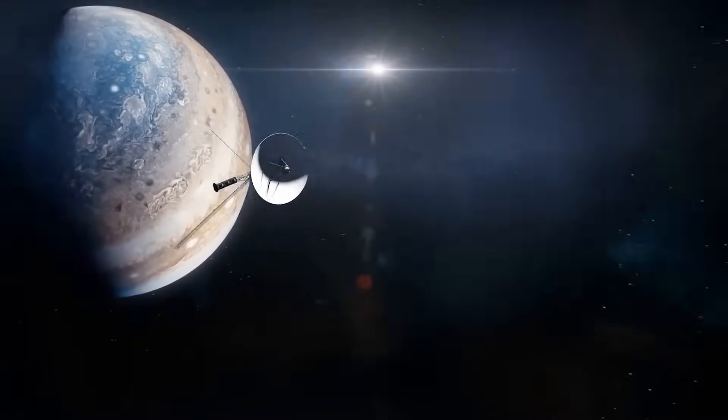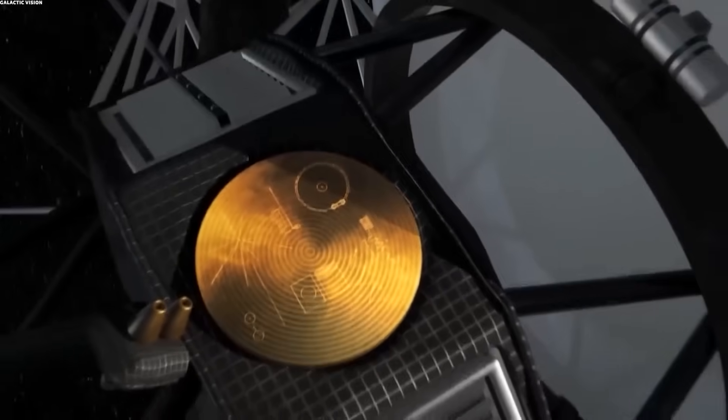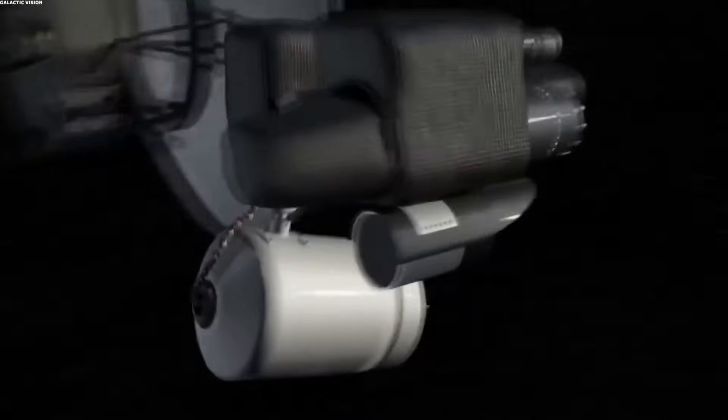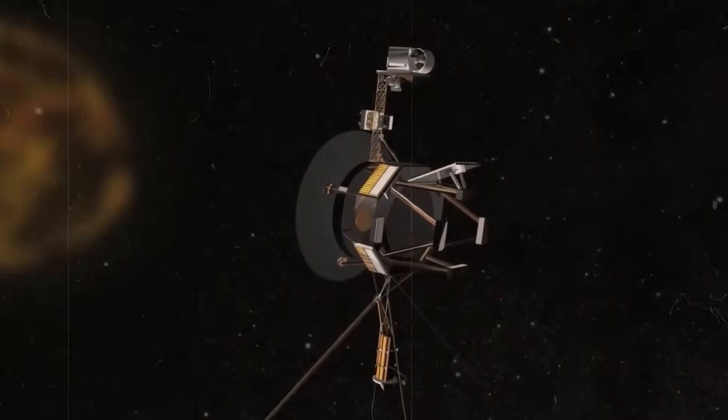When Voyager was launched in 1977, its trajectory was calculated using gravitational assists. But what if, some now speculated, it was subtly guided?